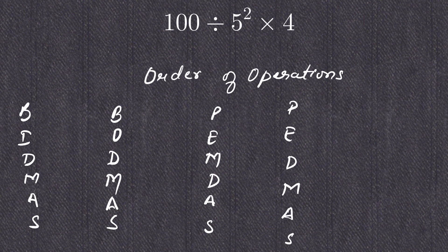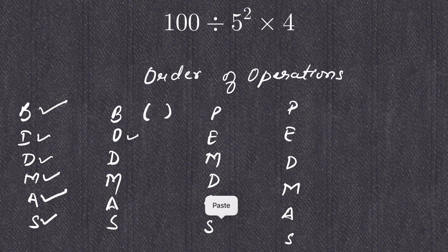B stands for bracket, I for indices, O for order, D for division, M for multiplication, A for addition, and S for subtraction. So B for bracket, O for order, D for division, M for multiplication, A for addition, and S for subtraction.